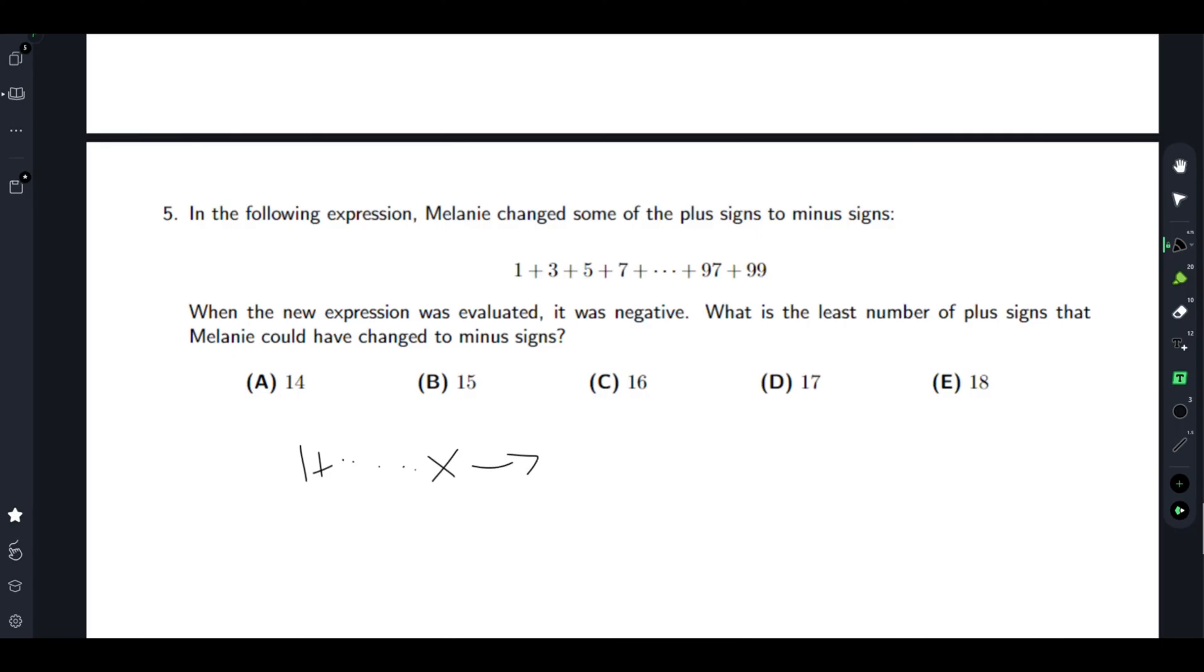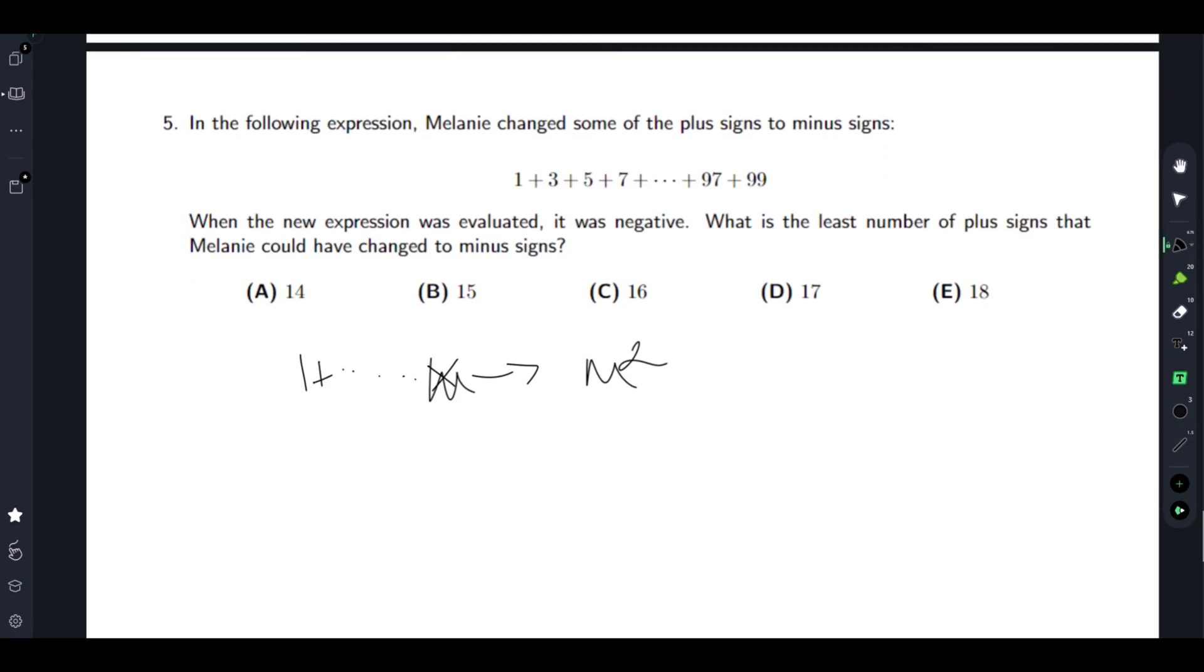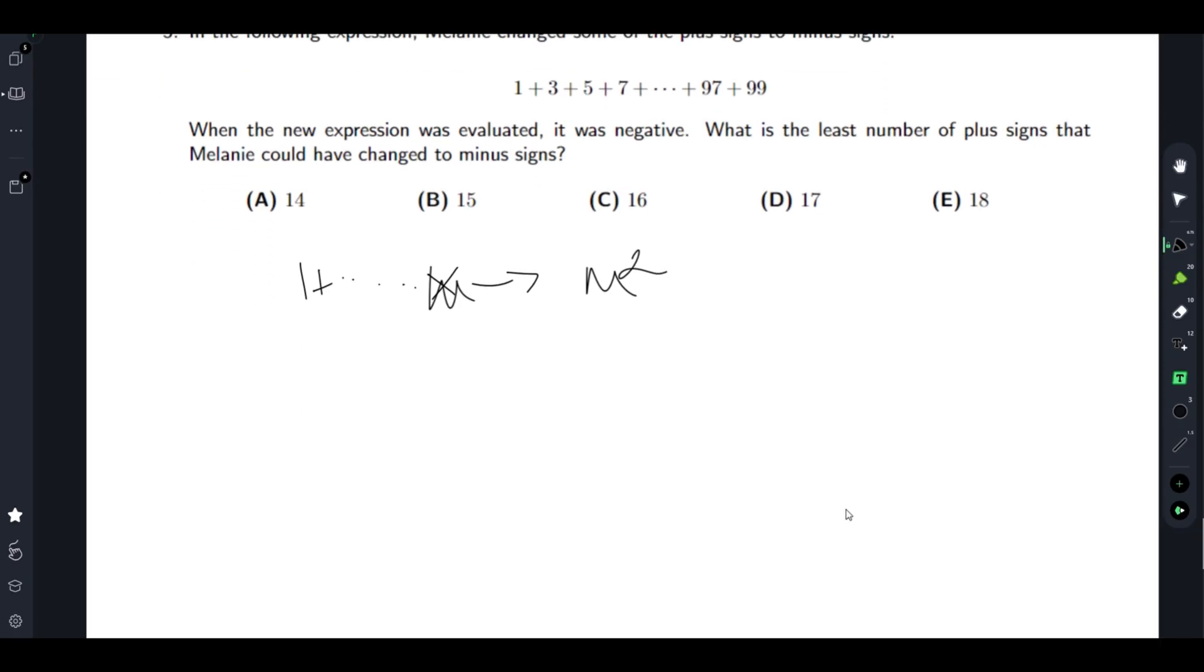First of all, we notice that 1 plus 3 plus dot dot dot to x, where some odd integers, is just x over two squared, so it's just m squared. So what we notice is that, for example, 1 plus 3 is 3 over 2 plus 1 squared, or 4, right? So 5 plus 2 plus 1 is 9, and 5 plus 1 over 2 is 3, and 3 squared is 9.